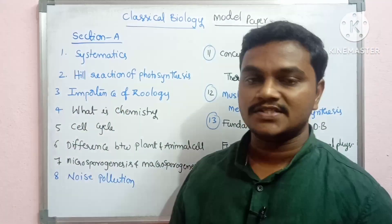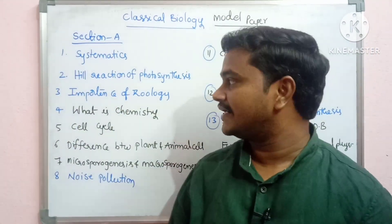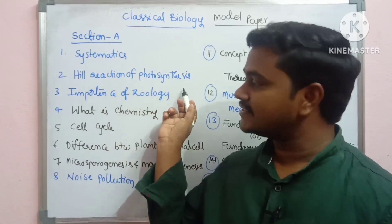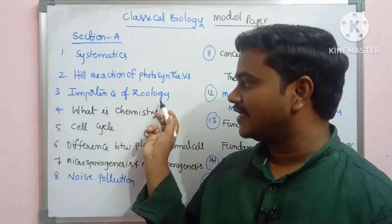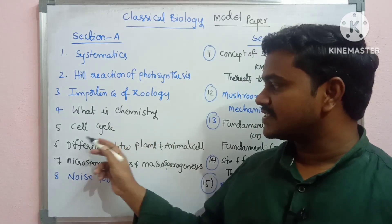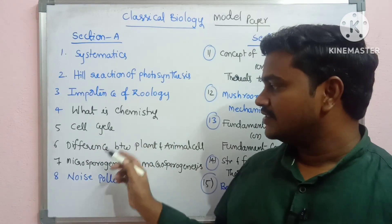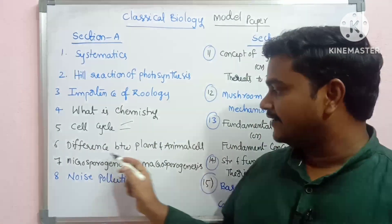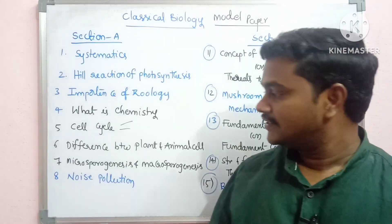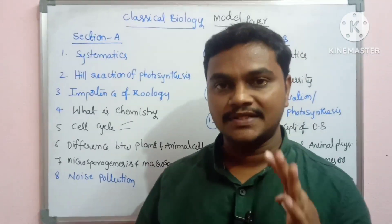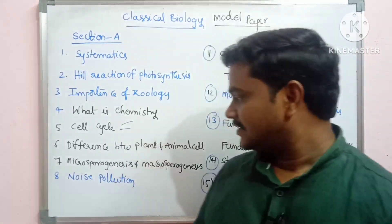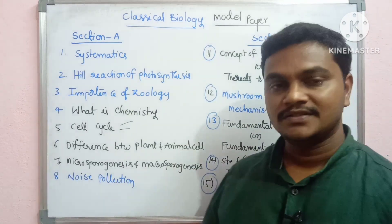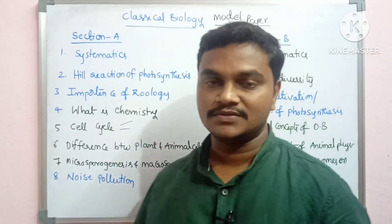First, we will discuss the systematic overview and the light reaction of photosynthesis. Then the importance of biology, what is chemistry, the cell cycle, the difference between plant and animal cells, microsporogenesis, and finally noise pollution.